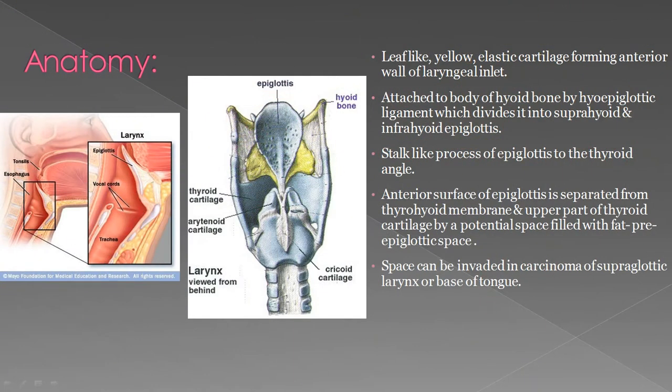Let's start with the anatomy. The epiglottis is a leaf-like yellow elastic cartilage forming the anterior wall of the laryngeal inlet. Here you can see the anterior wall and the epiglottis.